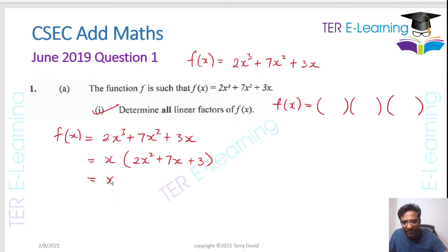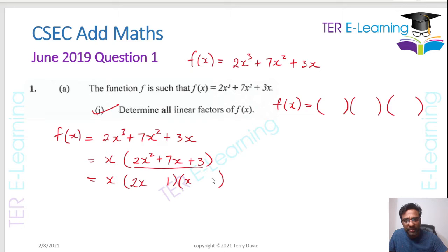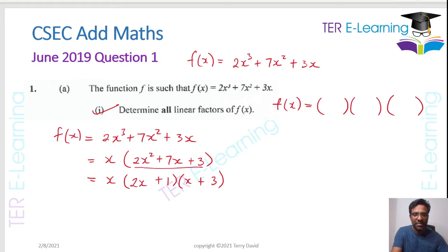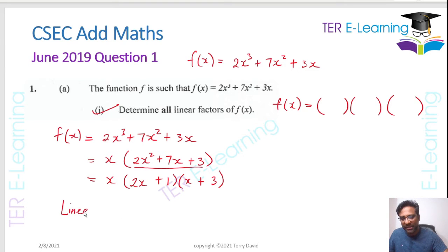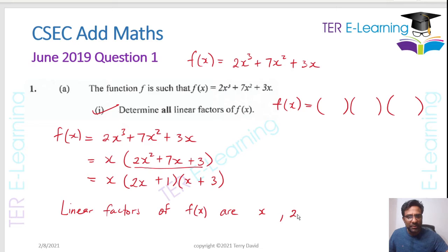Now I need to factorize the bracket 2x² + 7x + 3. This is a simple quadratic. Factorizing gives us (2x + 1)(x + 3). Therefore all the linear factors of f(x) are x, (2x + 1), and (x + 3).